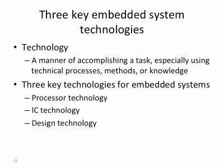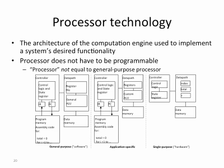In the next set of slides, I will talk about design technologies. A technology refers to the manner of accomplishing a task, especially using technical processes, methods, or knowledge. We're going to look at three key technologies for embedded system design: processor technology, IC technology, and design technology. Processors — including microprocessors or microcontrollers — are used in all these embedded systems, and the architecture of the computation engine used to implement a system's desired functionality could be very different.